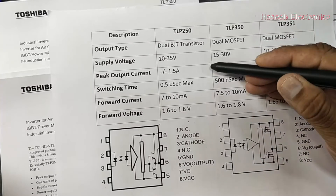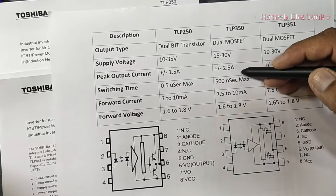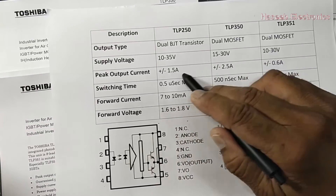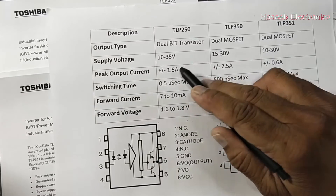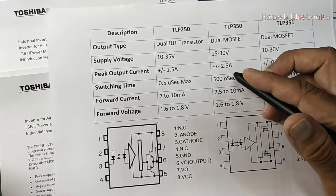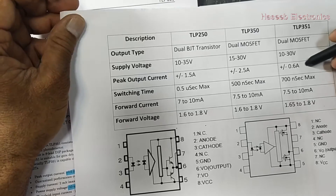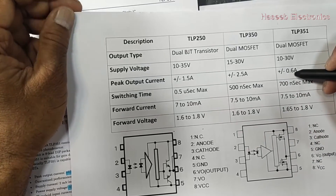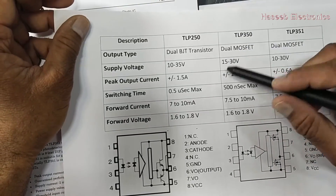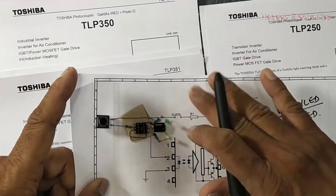The key difference between these three is the output current. TLP350 is 2.5A maximum while TLP250 is 1.5A, so you can swap them when current is not an issue. TLP351 at 0.6A is suitable for single-stage use, but when driving multiple IGBTs in parallel, you should consider the higher-current optocouplers.